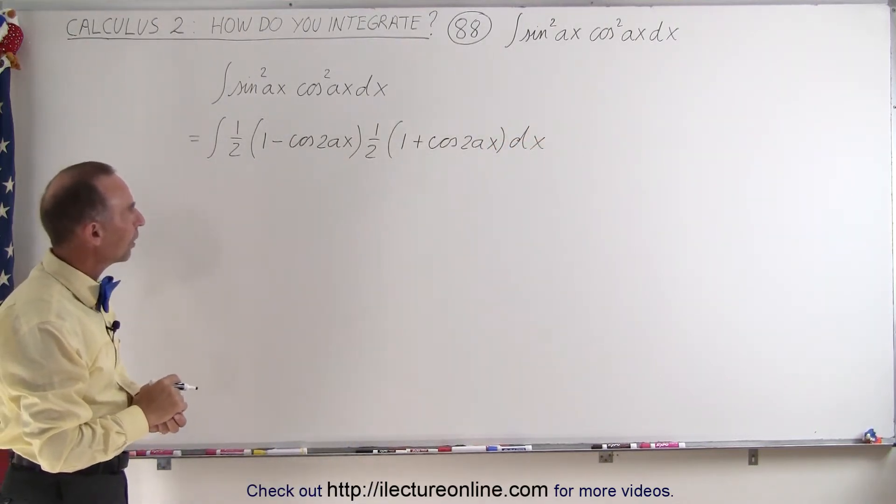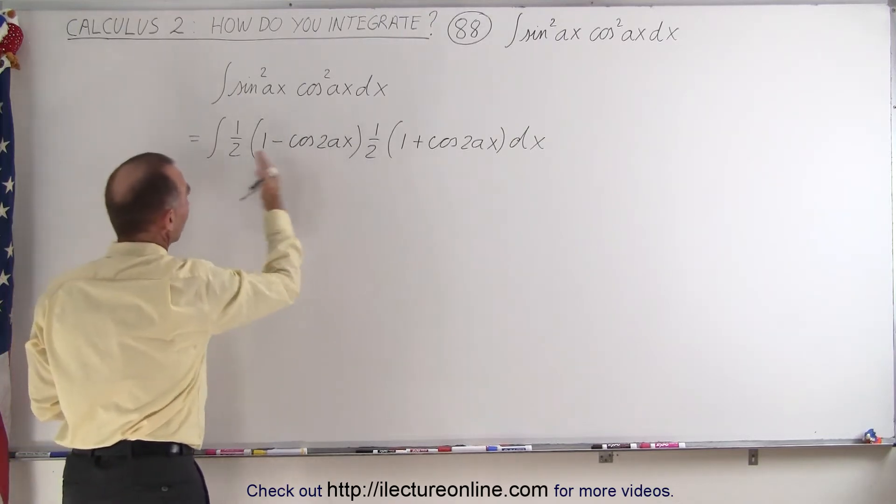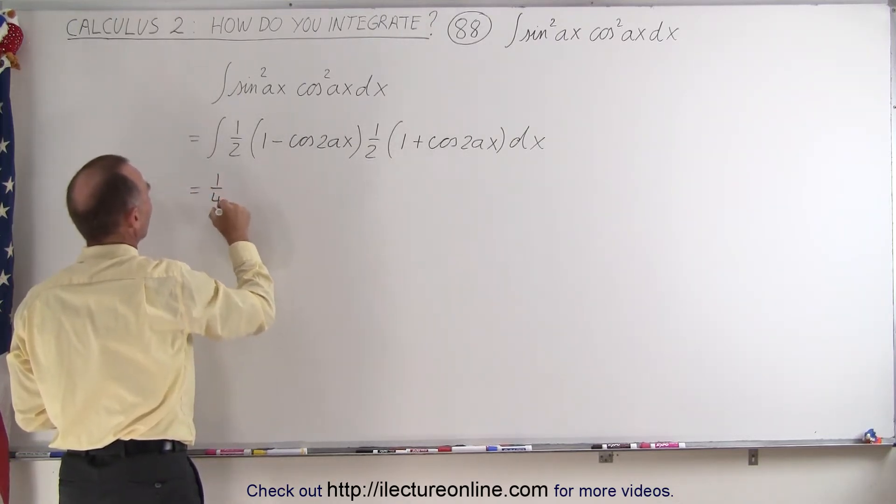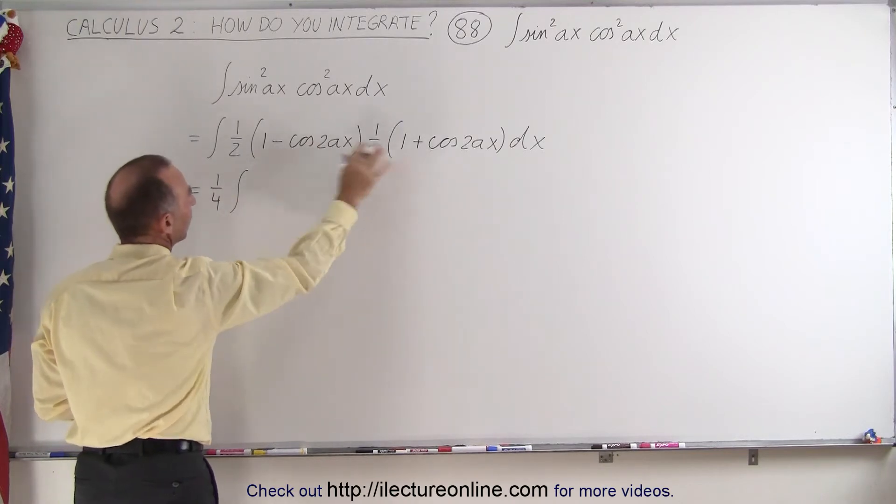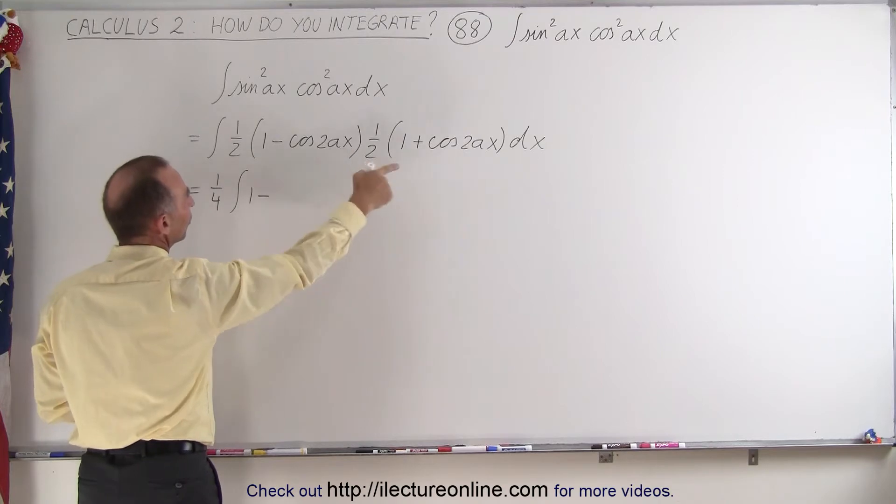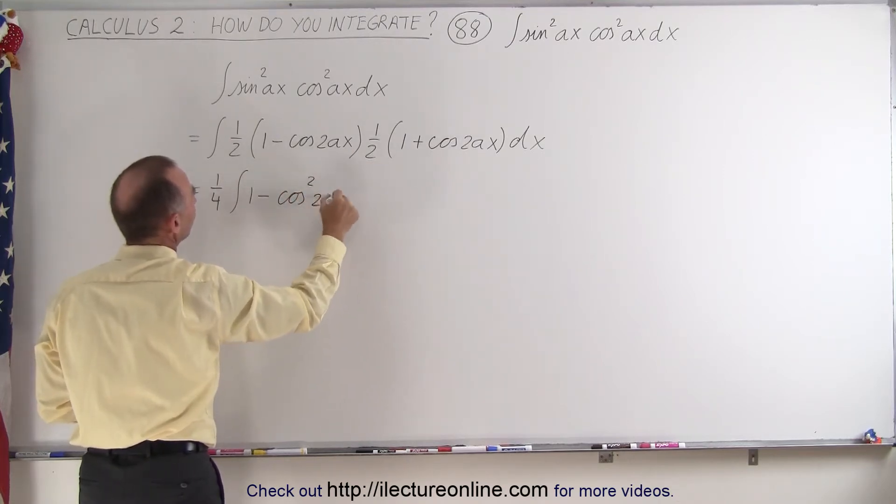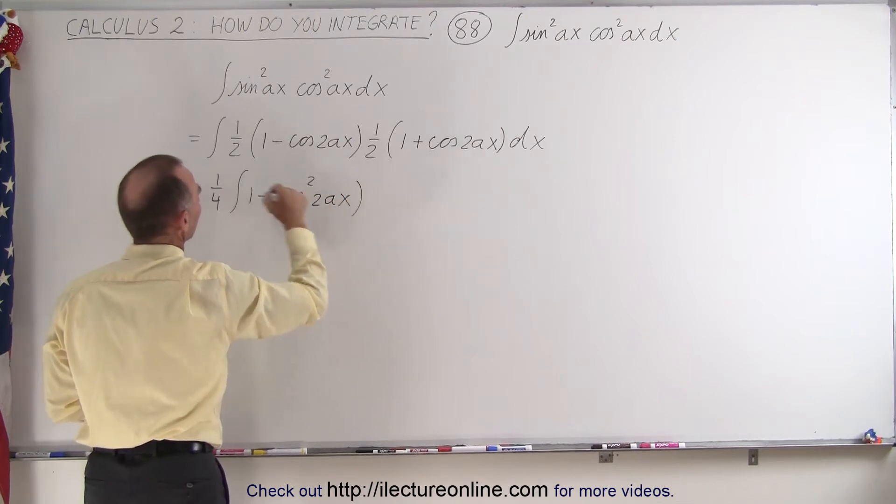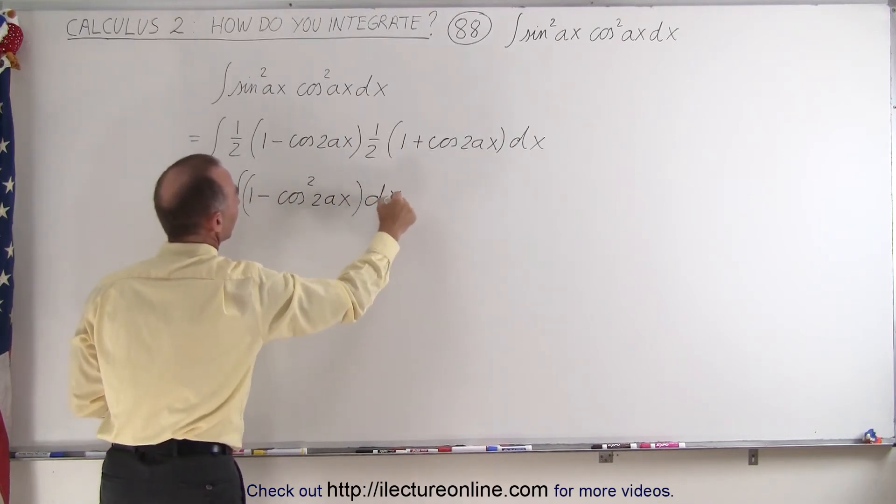So now what we can do is we can factor out the 1 halves, so this becomes equal to 1 quarter times the integral, and then we can multiply these out, so this becomes 1 minus this quantity squared, which will be the cosine square of 2Ax times dx.